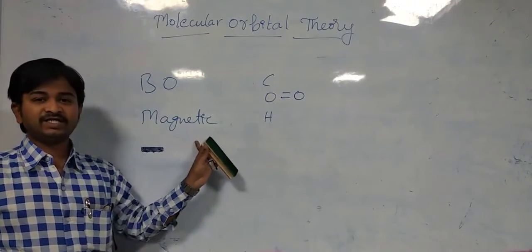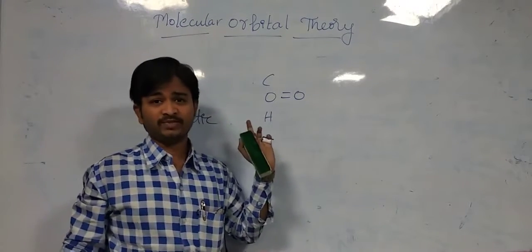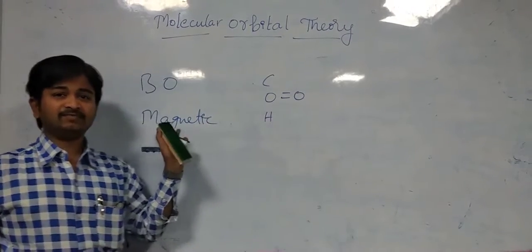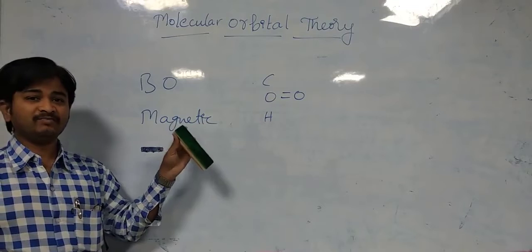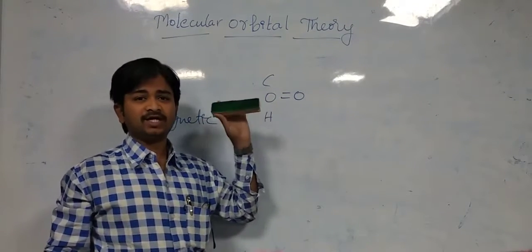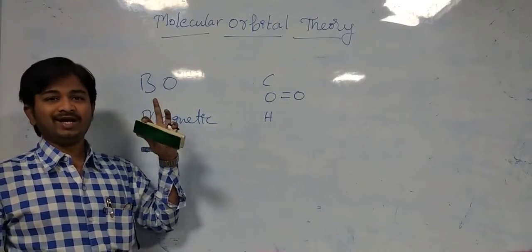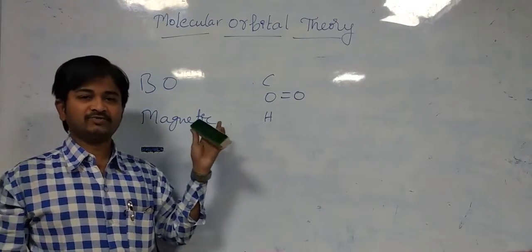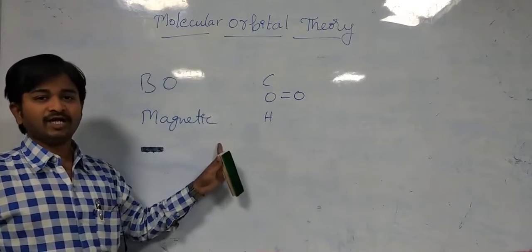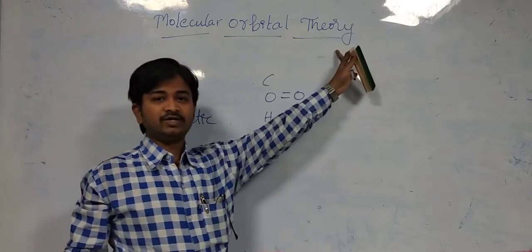The next application is magnetic property. Magnetic property is classified into two types: paramagnetic and diamagnetic. Paramagnetic means if there is a single electron in the outermost orbital. Diamagnetic means if there are paired electrons in the outermost orbital. These two properties we can find out using molecular orbital theory.